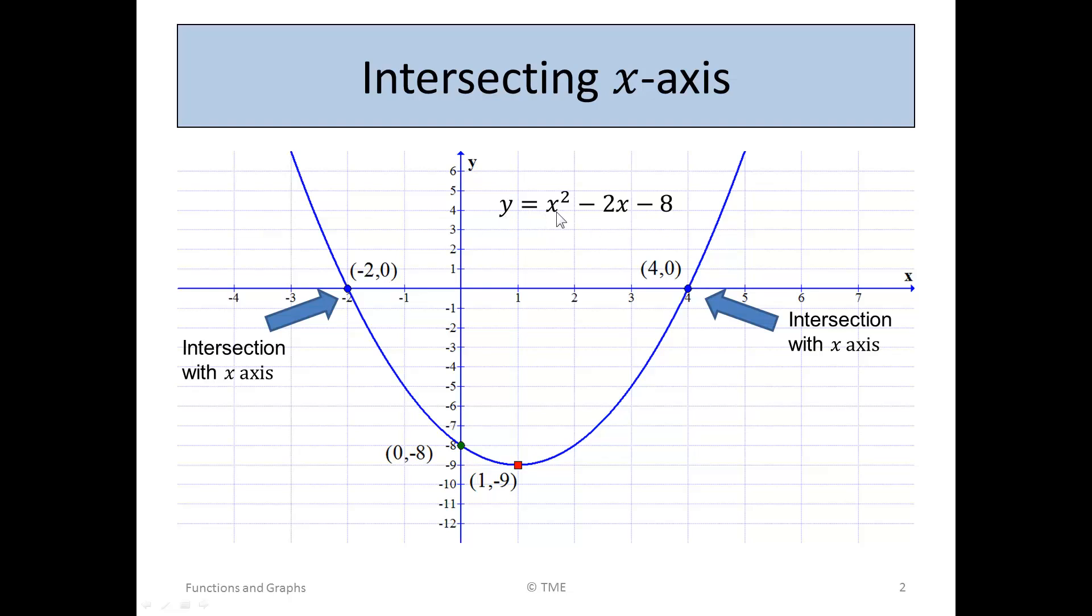Or f of x is x squared minus 2x minus 8. And we're interested in the intersection of that graph with the x-axis. So here's the x-axis here, the horizontal line through 0. And we want to know, where does it cross the x-axis?